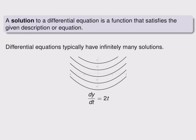Differential equations typically have infinitely many solutions because many different functions can have the same derivative. In this example, there's several different curves drawn, all of which have the same derivative, dy dt equals 2t. This is related to the fact that there are infinitely many antiderivatives for any given function. However, if we specify what's called an initial condition, such as y of 0 equals 1, this specifies one particular function, which is a solution to the differential equation, and goes through the specified point.